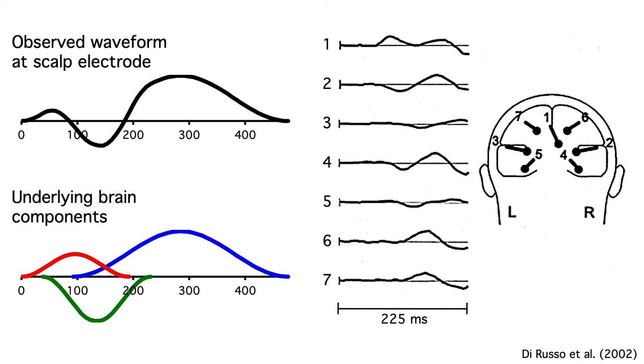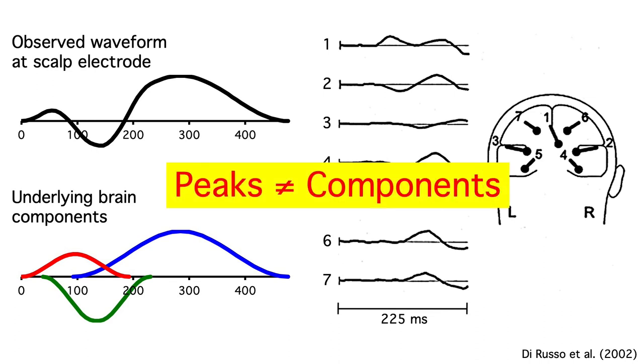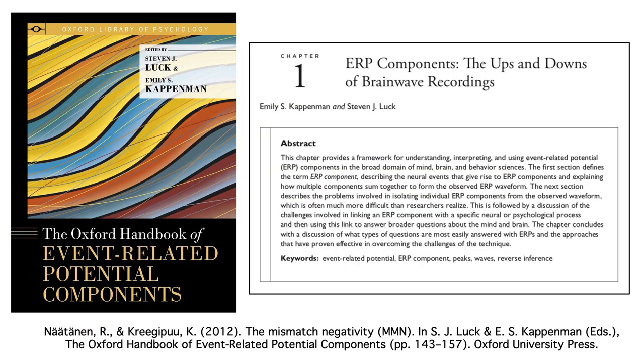So peaks and components are not the same thing. We see the peaks, but we can only draw indirect inferences about the underlying components. If you'd like to know more about how ERP components are defined and how they can be estimated from the observed scalp waveforms, take a look at this chapter that Emily and I wrote for the Oxford Handbook of ERP components.